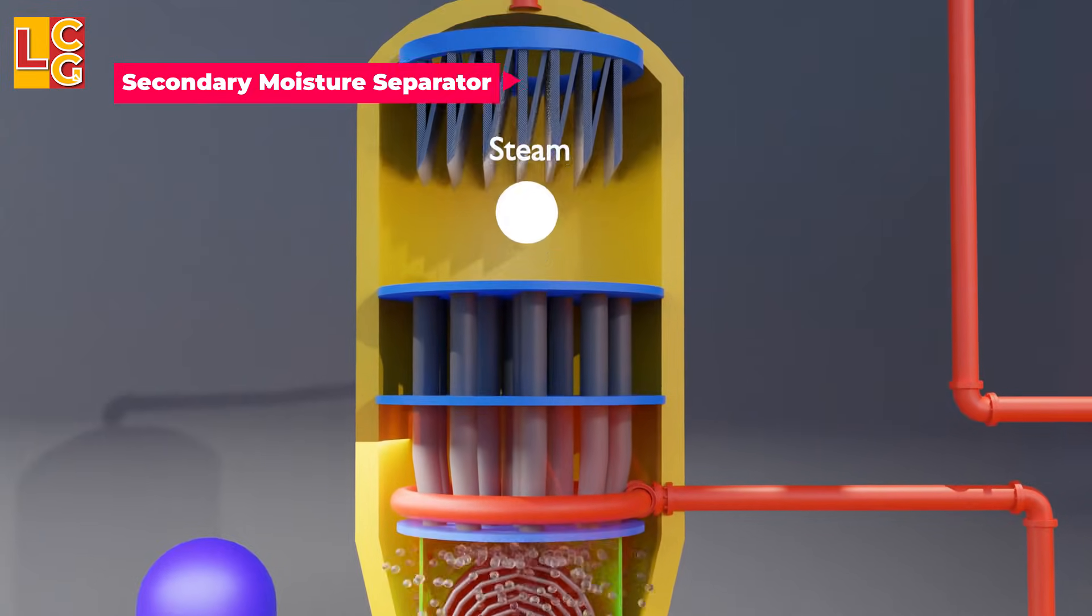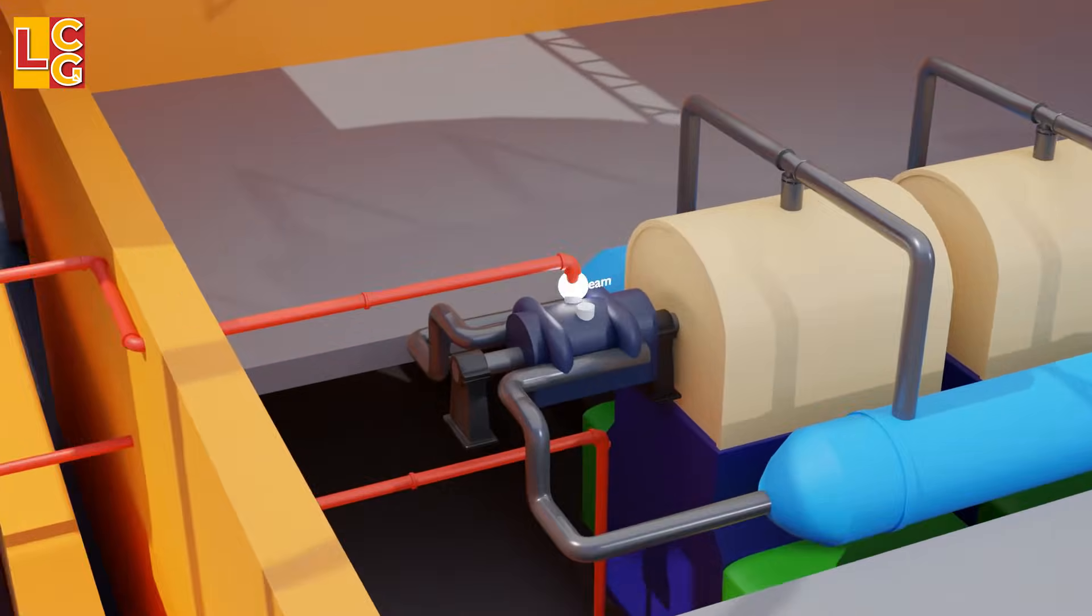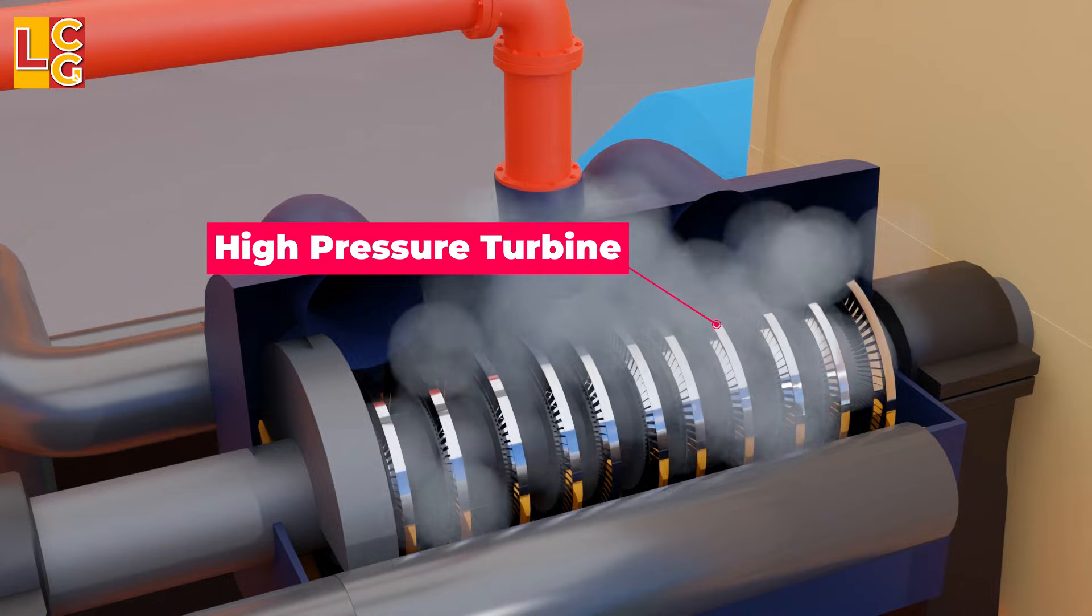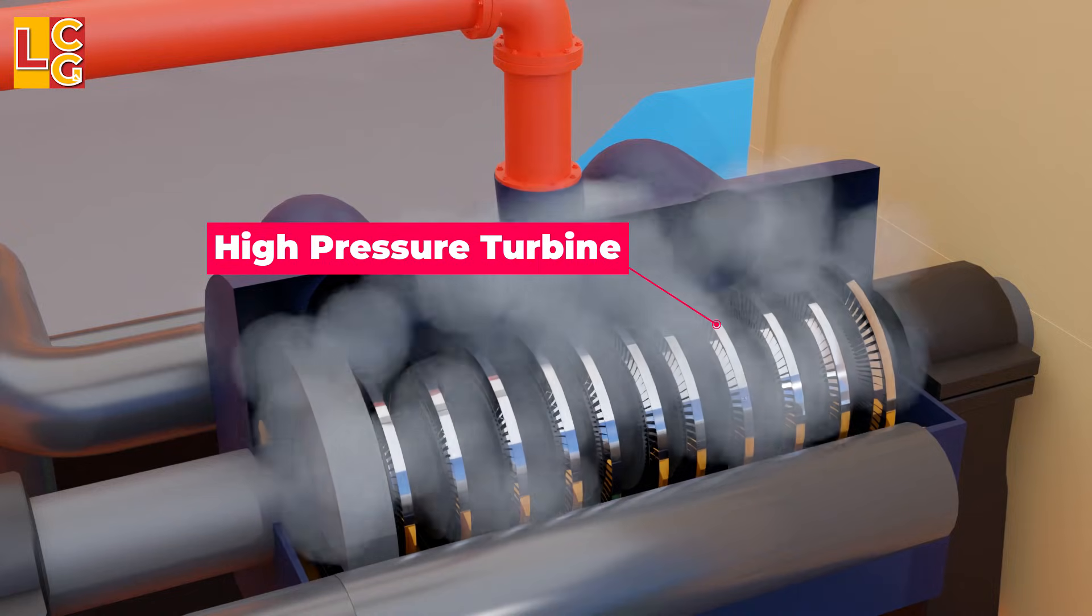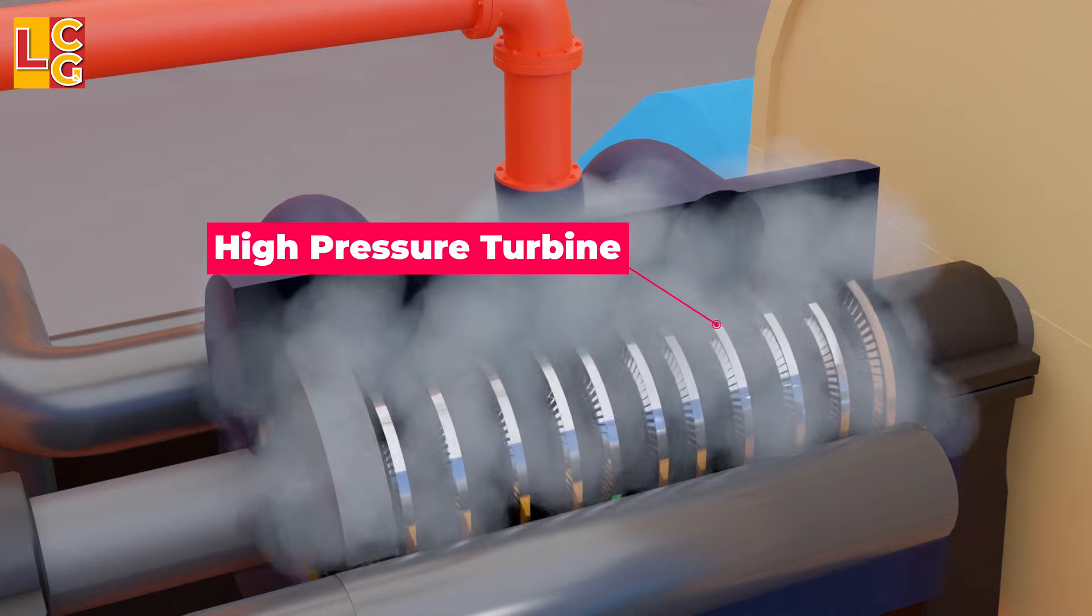Then, the steam goes through this steam outlet, going to the steam turbine. In the steam turbine, the steam first reaches the high-pressure turbine. Because of the pressure from the steam, this high-pressure turbine rotates.